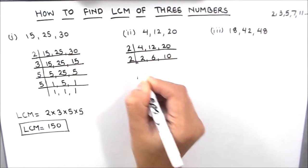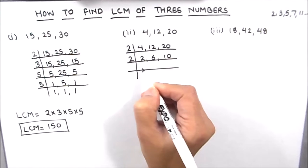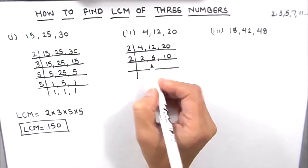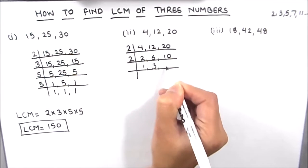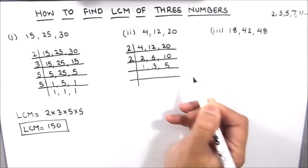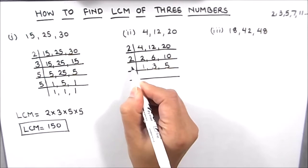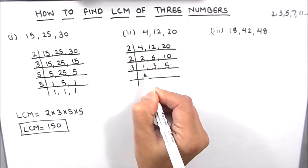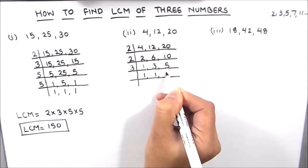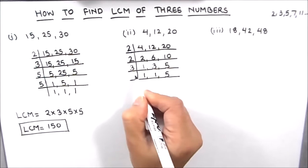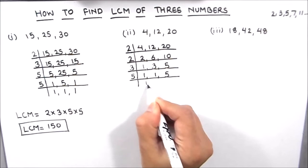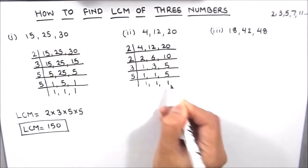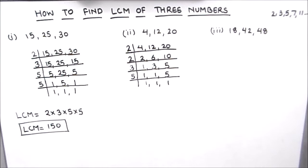Again the three numbers are even, so we can use 2 as the prime factor. 2 times 1 is 2, 2 times 3 is 6 and 2 times 5 is 10. Now 3 and 5 are prime numbers, so first we'll use 3 to divide 3 — 3 times 1 is 3, and we'll write 5 as is. Then we'll use 5 to divide the last number 5, giving 1. So all the three numbers are fully divided.